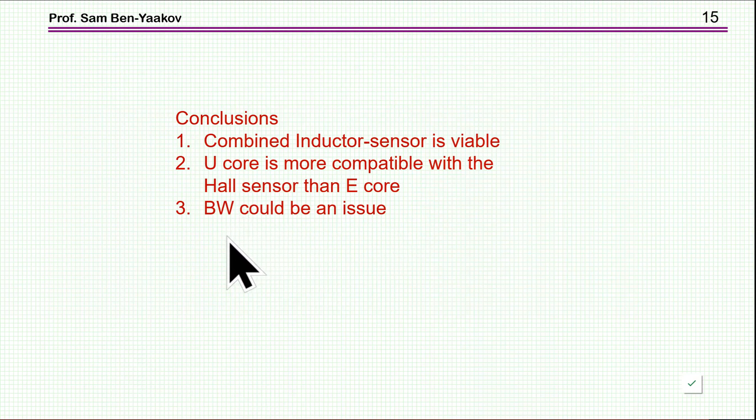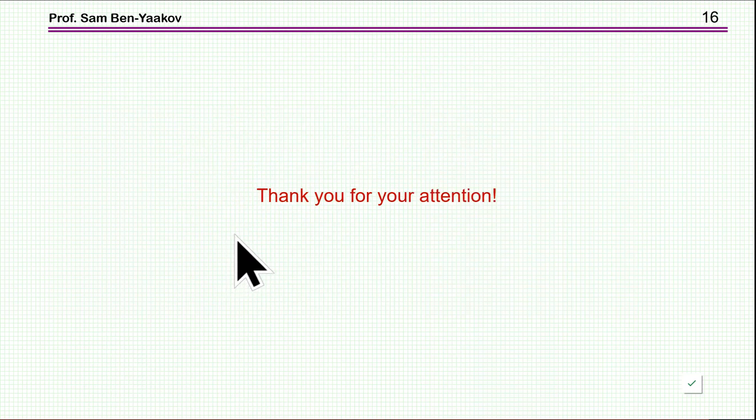And then there is a question of the bandwidth. Now the Hall sensors have typical bandwidth of say 200 kilohertz. In many applications, it could be okay. But if the switching frequency is very high and if you use it for say peak current mode, it may not be good enough. So this could be a real limitation if the switching frequency is high.